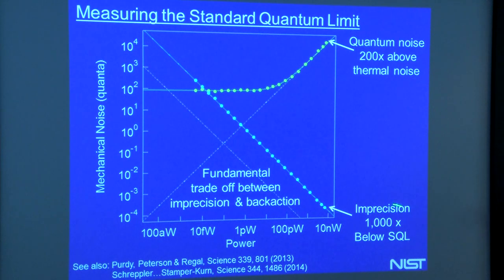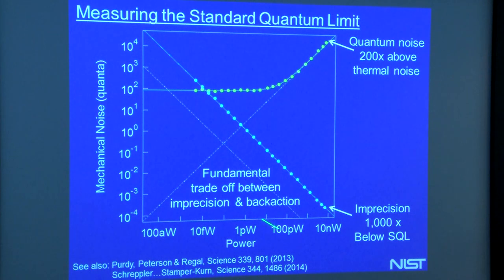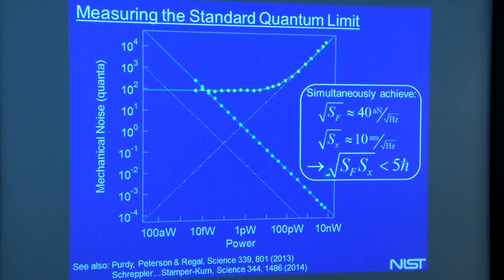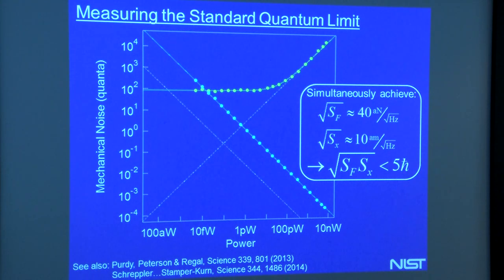The thing quantum mechanics requires is that the product of imprecision and back action is limited by h-bar. Our back action is nearly ideal. The main inefficiency in our measurements is the sheer detection efficiency of our microwaves — some loss before we get to our amplifier and some added noise of the amplifier itself.